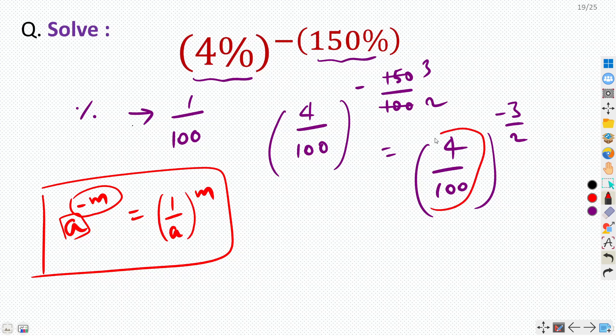So I will take the reciprocal of this base, 100 by 4, and I can convert this sign now. So we can rewrite this as 3 by 2.